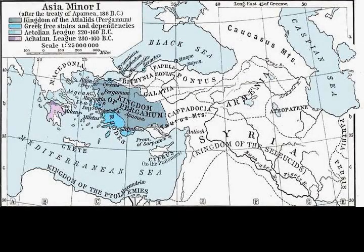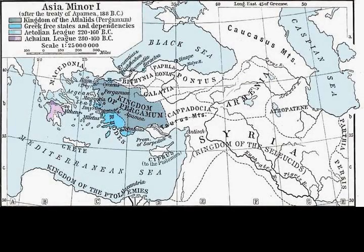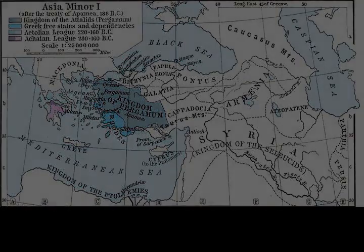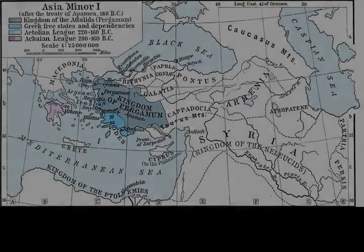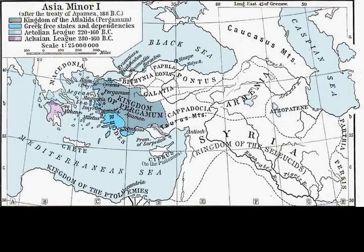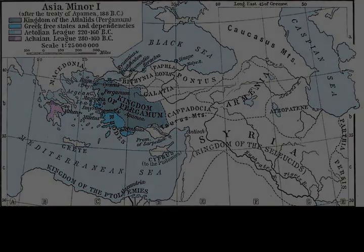The Aetolians began spurring Greek states to jointly revolt under Antiochus' leadership against the Romans, hoping to provoke a war between the two parties. The Aetolians then captured the strategically important port city of Demetrias, killing the key members of the local pro-Roman faction. In September 192 BC, the Aetolian general Thoas arrived at Antiochus' court, convincing him to openly oppose the Romans in Greece.